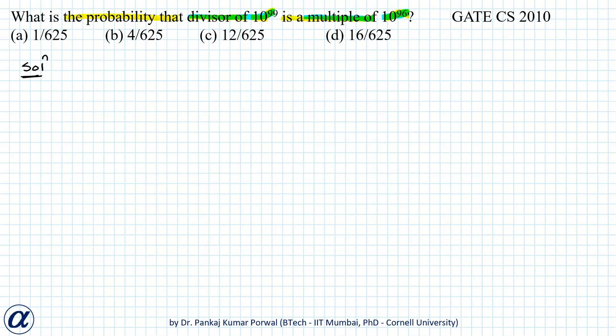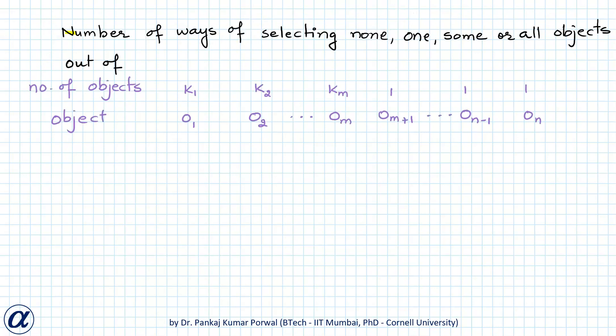From that we can find the probability. Before I solve this question, let us understand one important concept that I will use — and that is the number of ways of selecting none, one, some, or all the objects out of a given combination of objects.